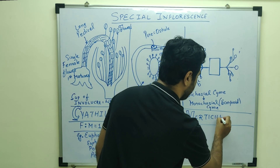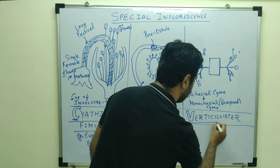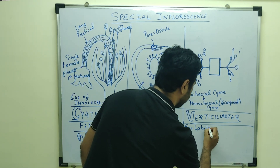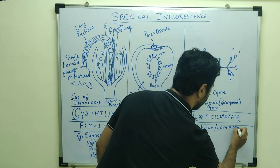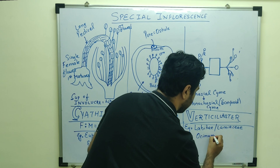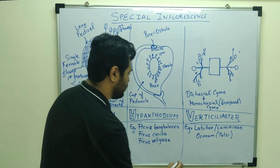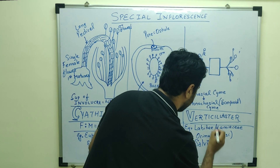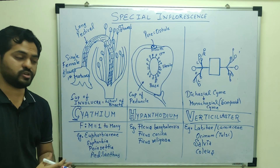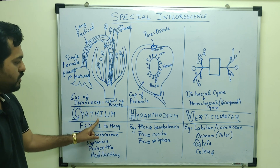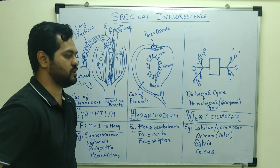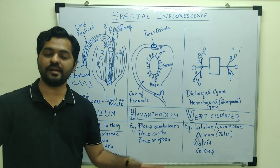So when dichasial cymose converts into monochasial cymose scorpioid type, the inflorescence appearance that is known as verticillaster type of inflorescence. The example is the Labiatae family, also known as Lamiaceae family. Examples include Ocimum sanctum — that is Tulsi — as well as Salvia and Coleus. So these are the examples of verticillaster. We have discussed in detail the three special inflorescence types: cyathium, hypanthodium, and verticillaster, where dichasial cymose converts into monochasial cymose.